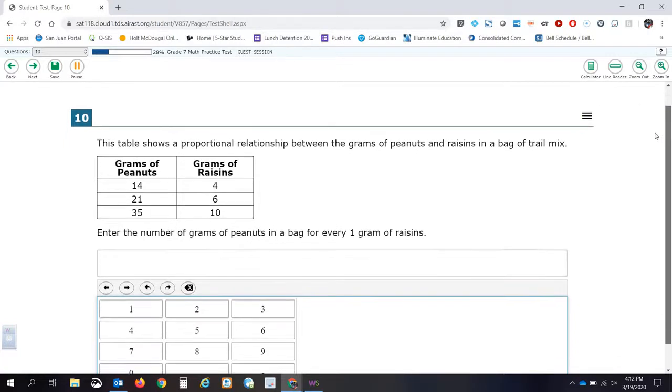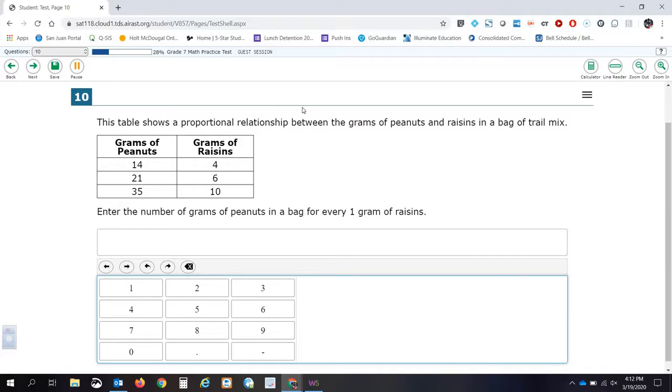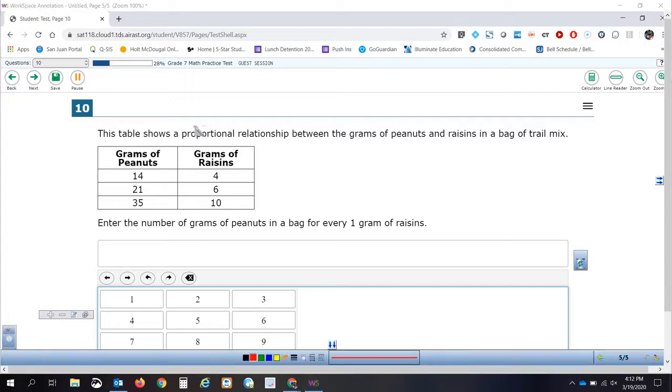Question number 10. The table shows a proportional relationship between the grams of peanuts and the raisins in a bag of trail mix. Enter the number of grams of peanuts in a bag for every one gram of raisins. Let's take a look at this table. We've got grams of peanuts on the left, grams of raisins on the right. And they tell us that it is a proportional relationship. Just to remind you what a proportional relationship is: a proportional relationship is when the output can be found by multiplying the input by a constant of proportionality. And that K is equal to Y divided by X.